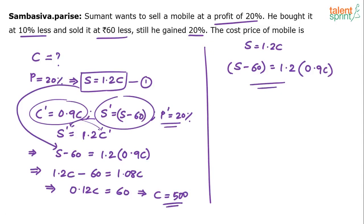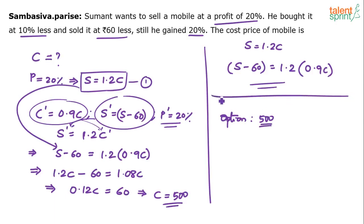Or you can go by options if you don't want to deal with these equations. Use options and solve it. For example, definitely one of the options will be 500. Let's say some option is 500 — how do you verify this? According to this option the answer is 500. How do you check whether it satisfies the conditions?